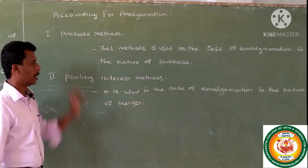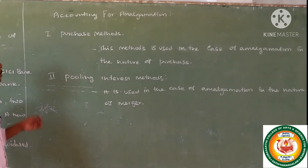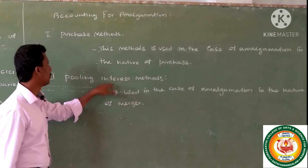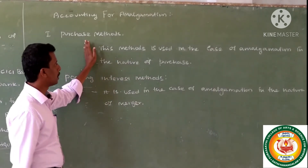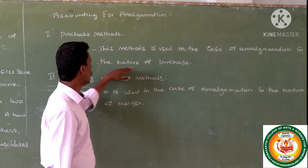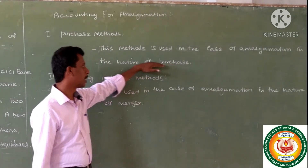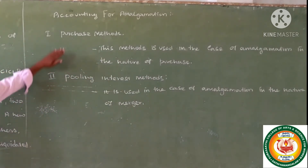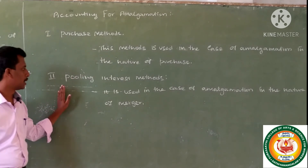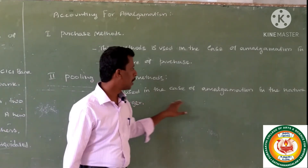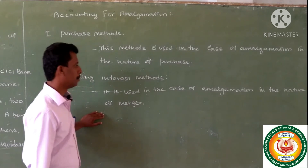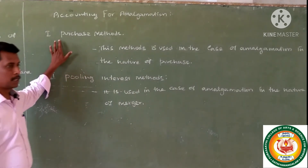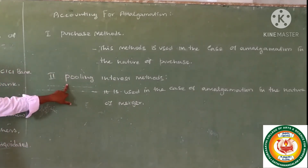Next, in accounting for amalgamation, there are two methods. First one: Purchase Method — this method is used in the case of amalgamation in the nature of purchase, involving shares and debentures. Second one: Pooling of Interest Method — it is used in the case of amalgamation in the nature of merger.